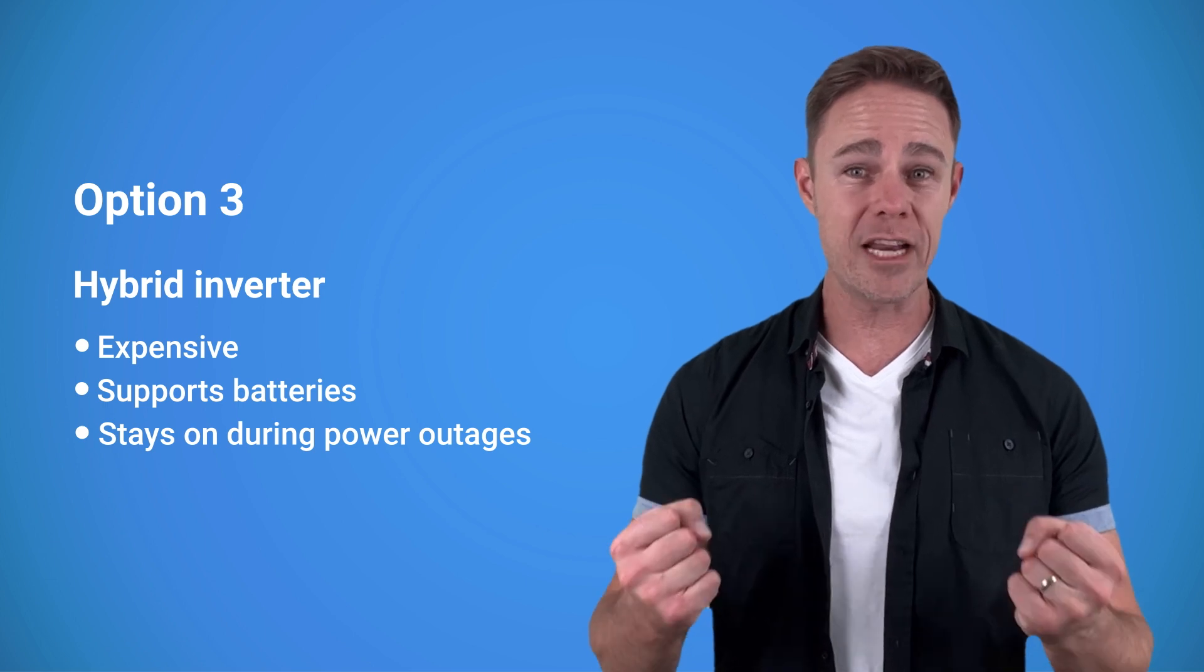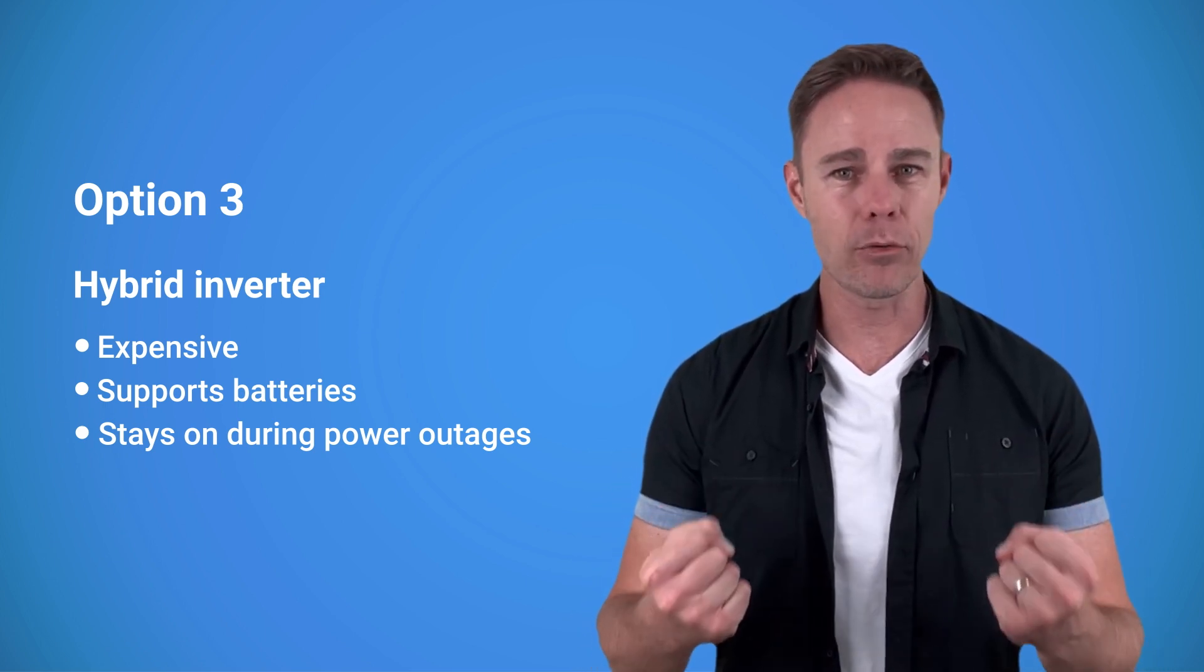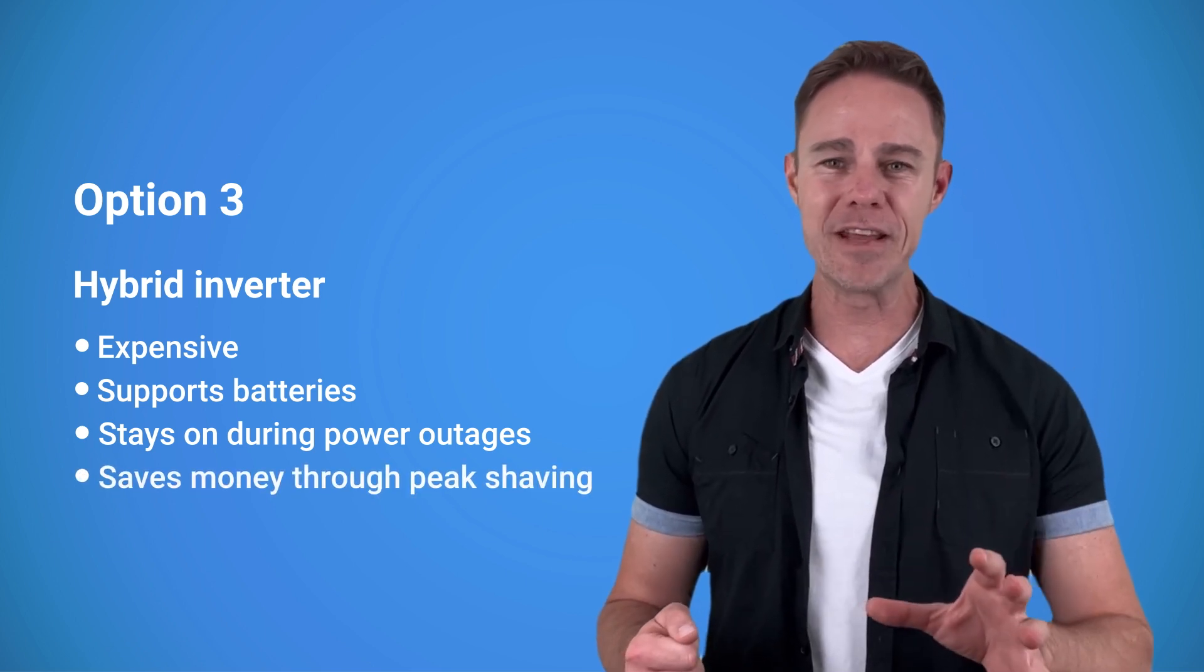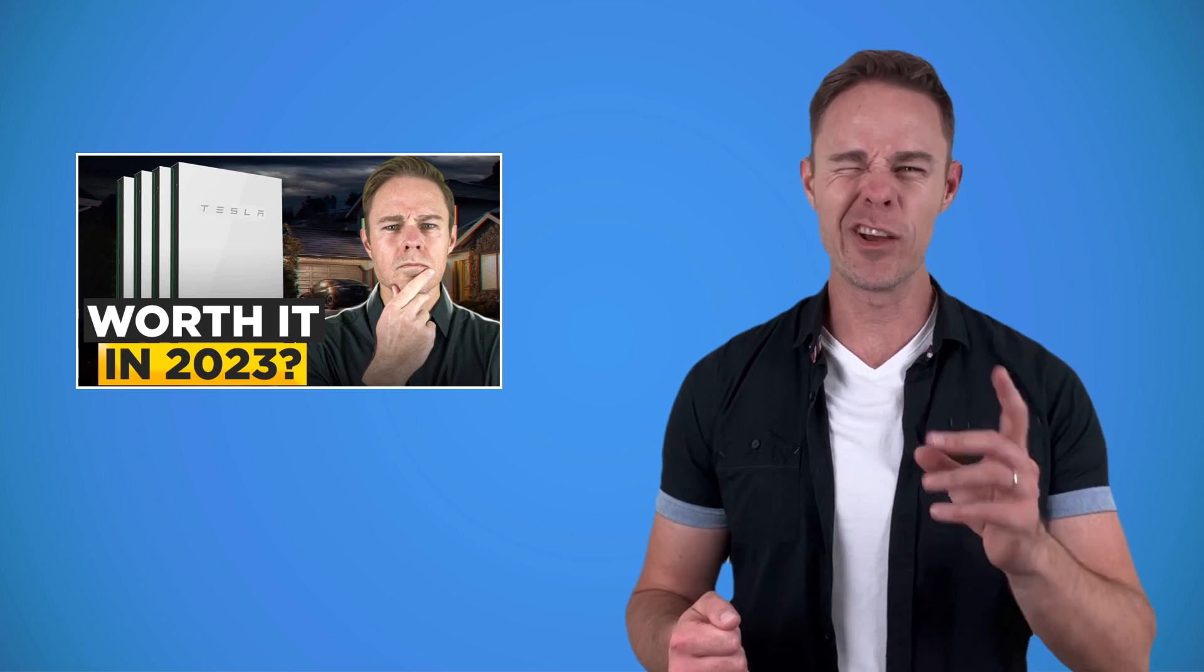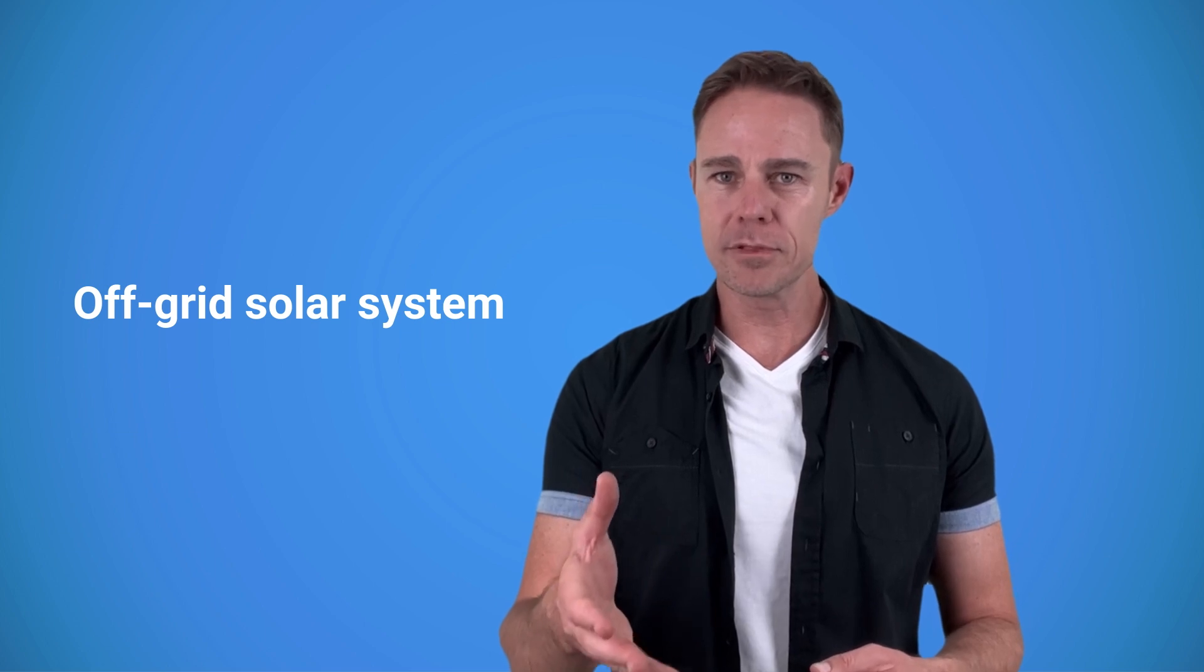Some hybrid inverters can also be programmed to draw energy from the battery instead of using commercial electricity at peak rate hours - that's called peak shaving. We've talked about it in our video about Tesla Powerwall. If your house is not connected to the grid or you just don't use it, you would get an off-grid solar system. RV and boat systems fall into the off-grid category as well.